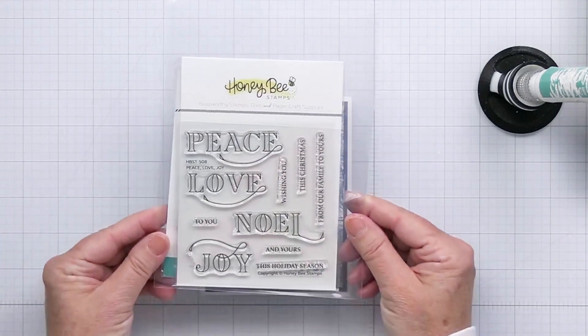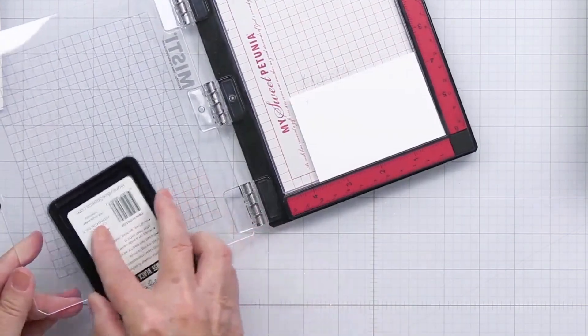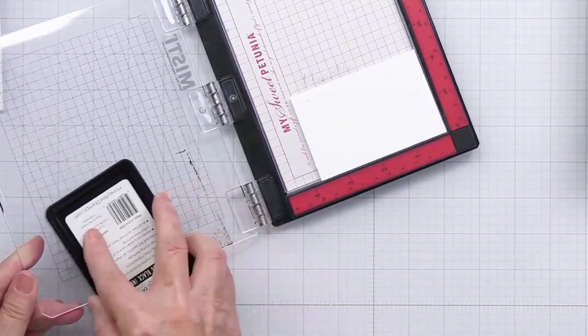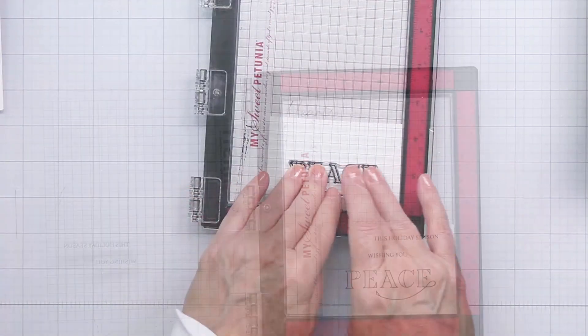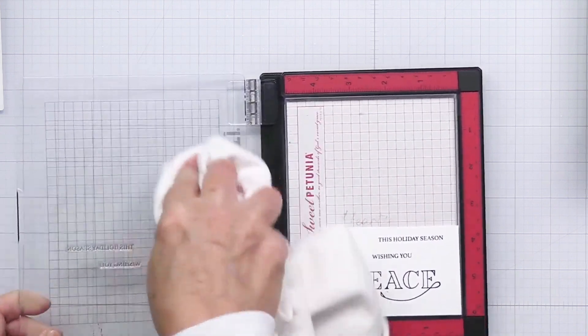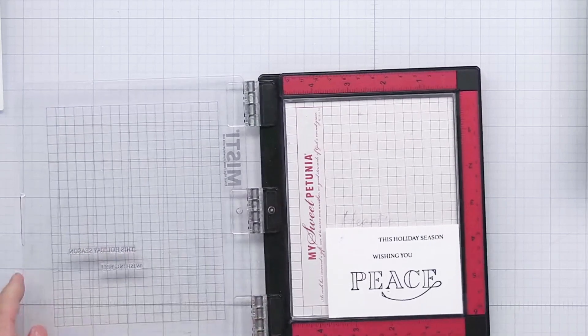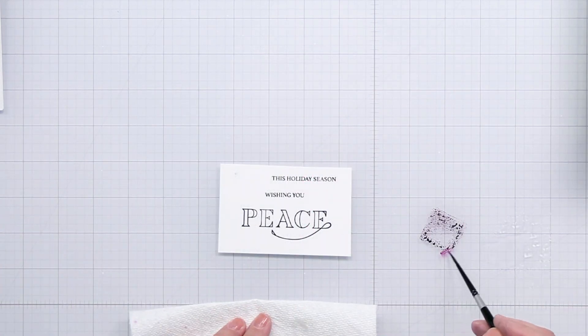Now I'm going to be using one of my favorite sentiments of all time from Honey Bee—this is the Peace Love Joy set. I love this set so much. I'm going to be stamping the word peace out with our Honey Bee intense black ink, and I'm also going to do two other little sentiments from that set: wishing you and this holiday season, so that our entire sentiment is wishing you peace this holiday season.